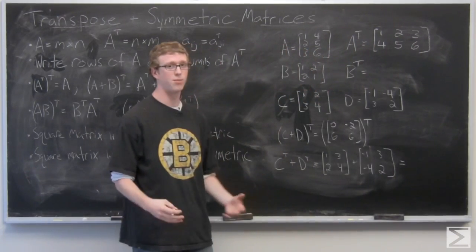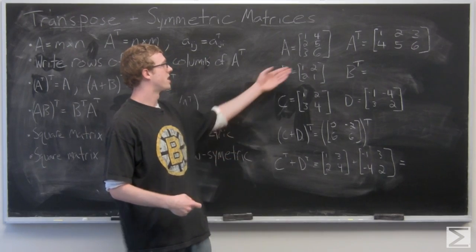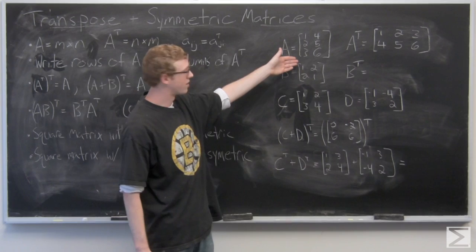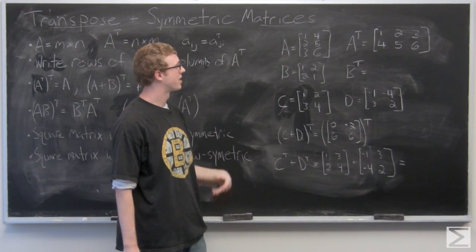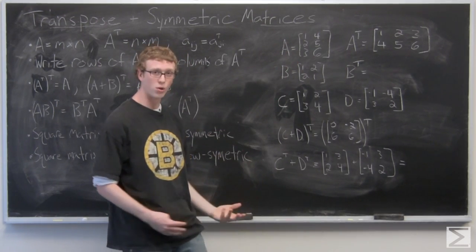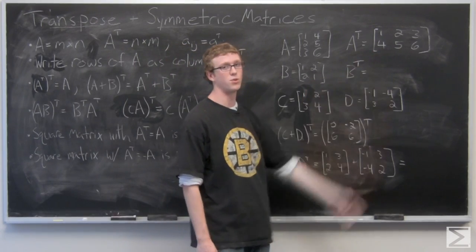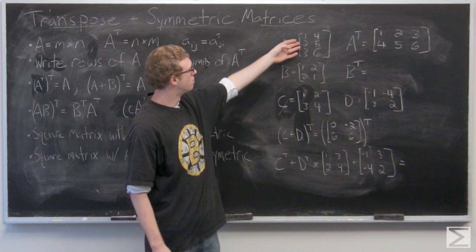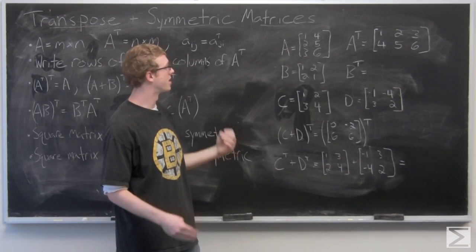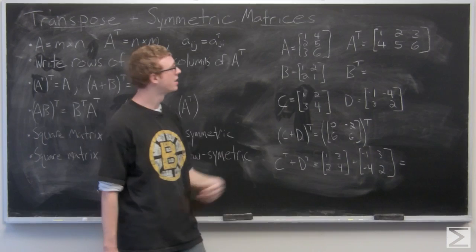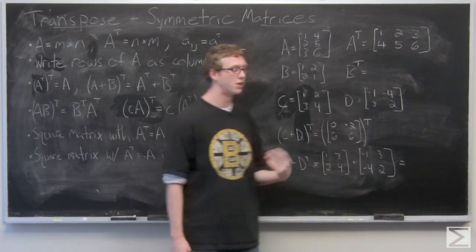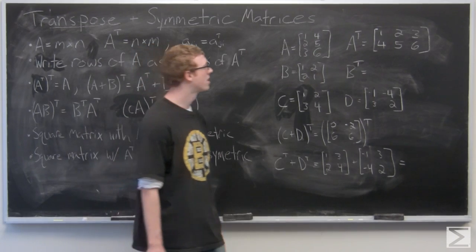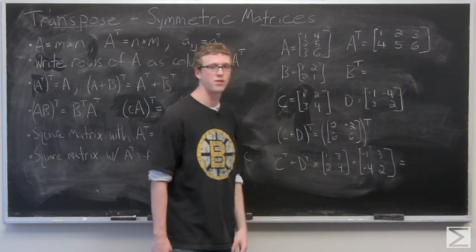So essentially the most important thing to take a look at here is where say the 3 and the 4 end up. So you have the third entry in the first column that's row 3, column 1 is going to go to column 3, row 1. Number 2 is in row 2, column 1. It's going to go to column 2, row 1 of the resultant transpose matrix. And then you can see for the rest of the numbers as well.